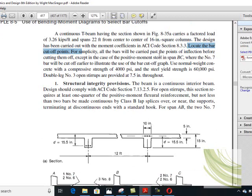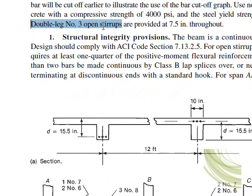All bars will be carried past the points of inflection before cutting them up. The bars need to be continued up to the point of inflection and extended beyond that for a distance of d, except in the case of positive moment steel in span BC where the number 7 bars will be cut earlier to demonstrate use of bar cut-up graphs. Normal weight concrete is given, with material strengths specified, and double-leg number 3 stirrups are provided at 1.5 inches, which also complies with the ACI criteria.